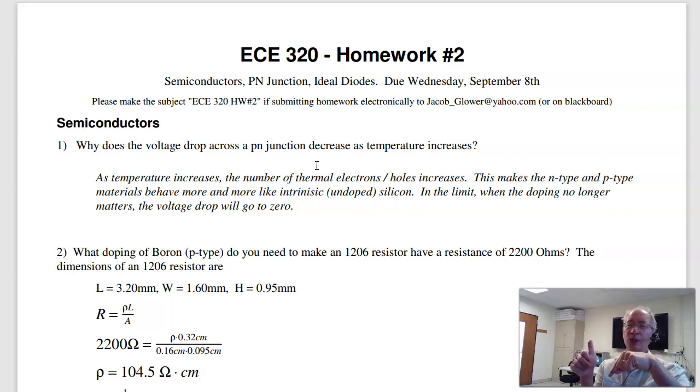Basically, semiconductors like cold. The colder it is, the better. The colder, the fewer thermal electrons you have, the more the doping matters. So cold is good. In fact, there is no limit for how cold you can get it. Well, absolute zero is probably bad, but minus 50, minus 100 degrees Celsius, electronics actually work better.